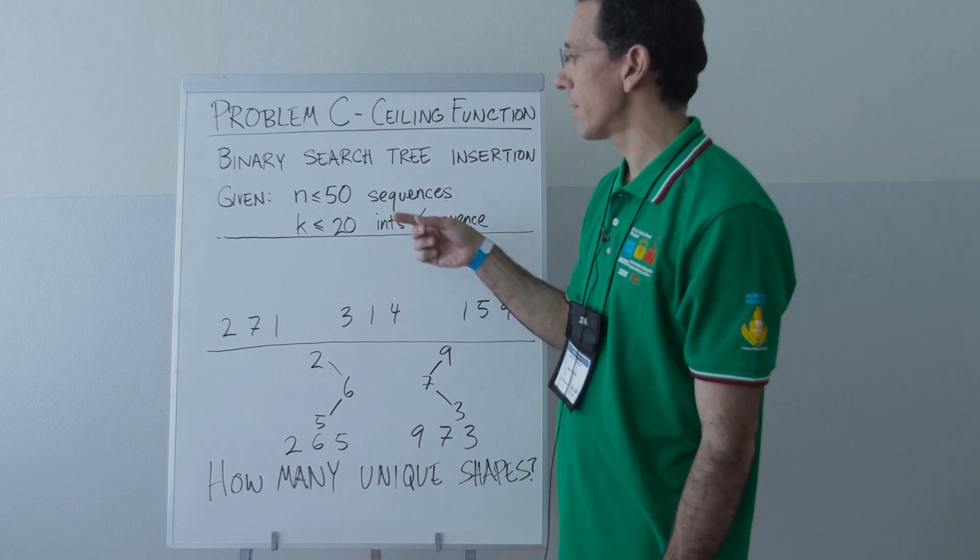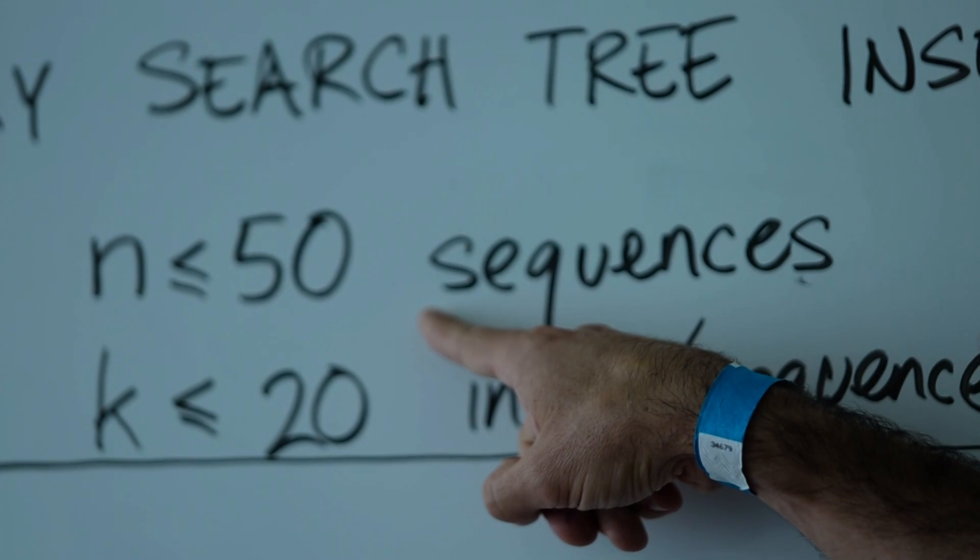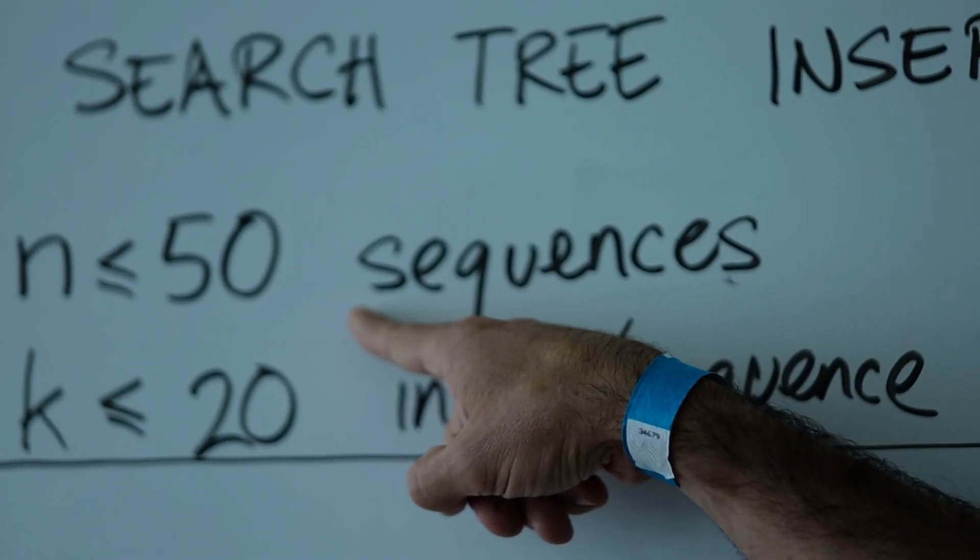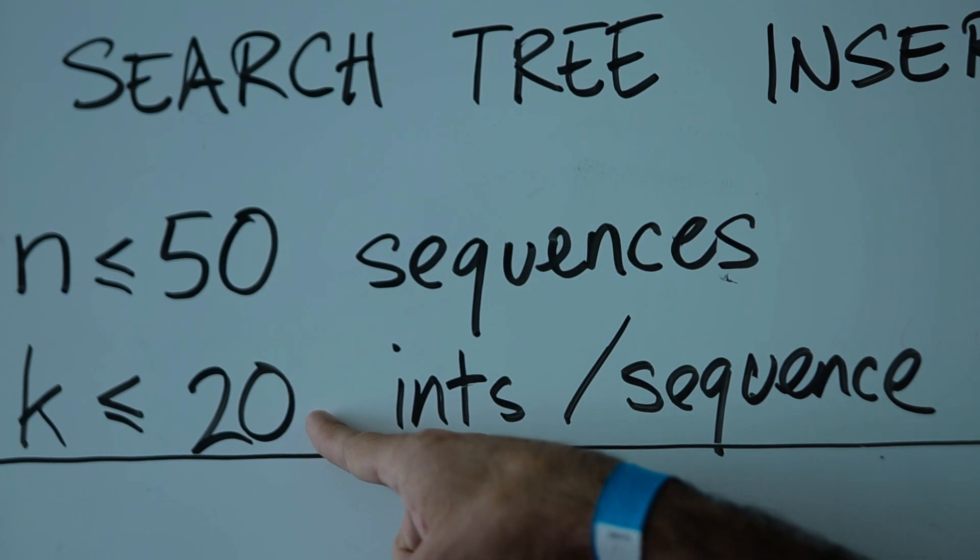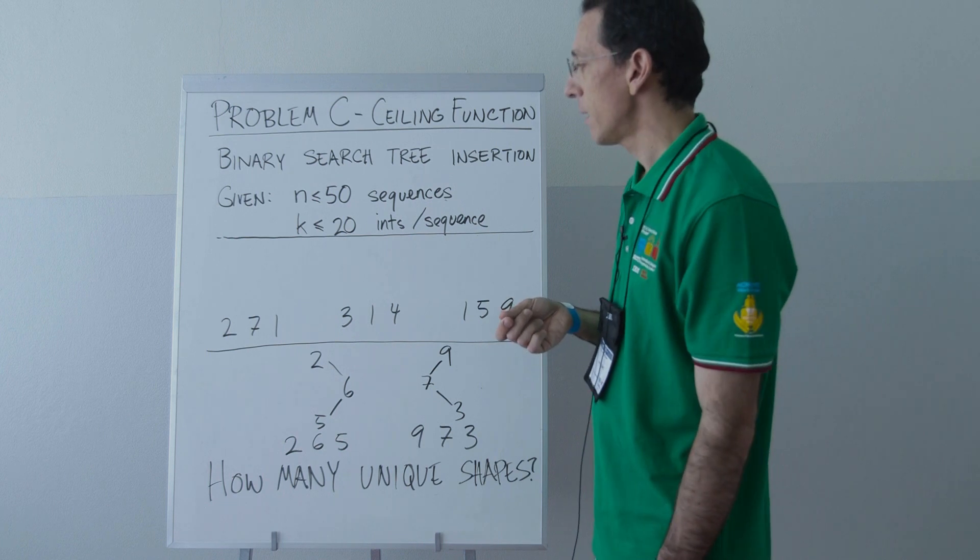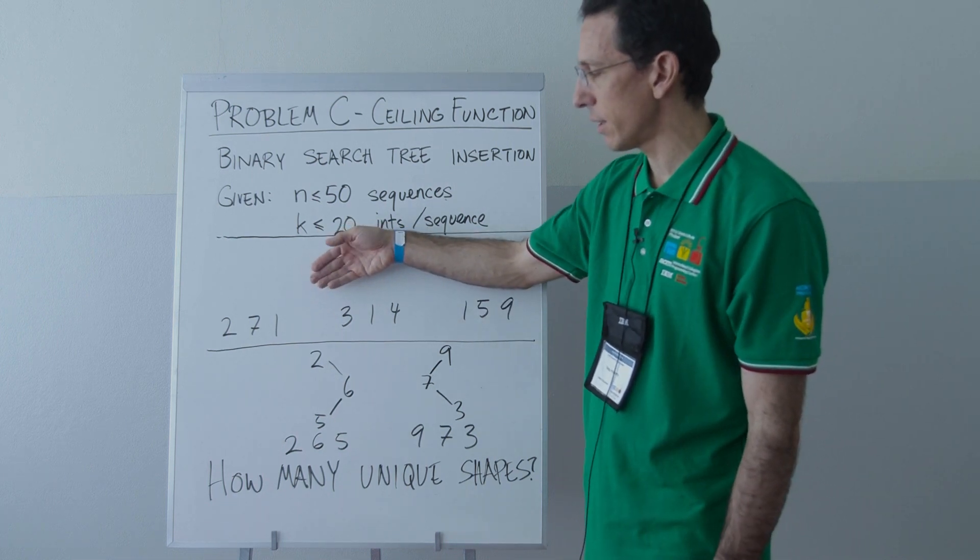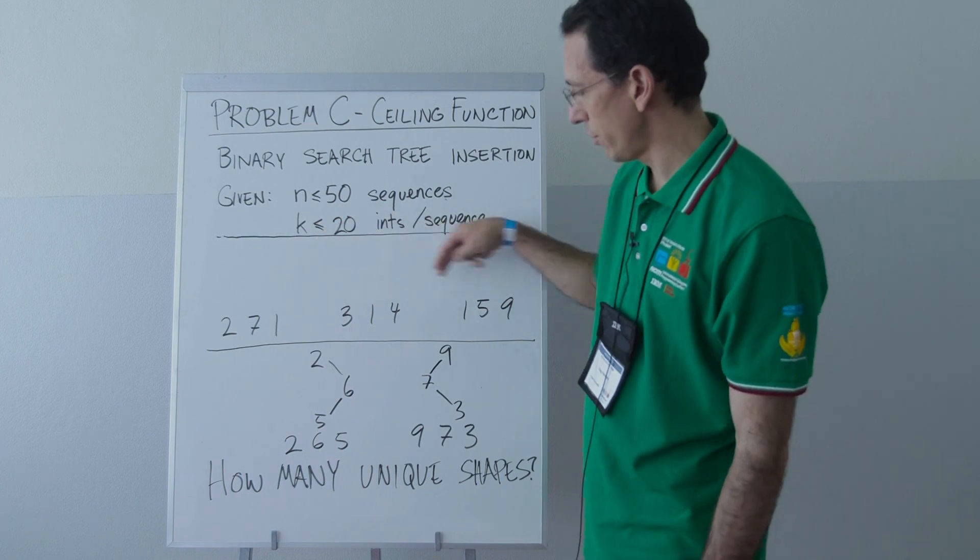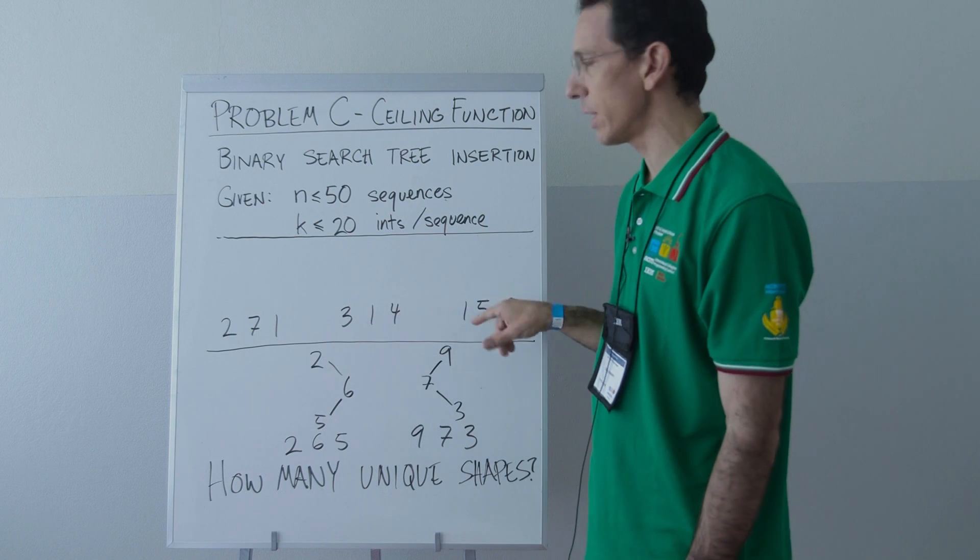The idea here is that as input you're going to be given up to 50 sequences of integers, and each of those sequences is going to have up to 20 integers, and every sequence will have the same number of integers. So you might get, in this case I've shown you the first sample data, 5 sequences: 1, 2, 3, 4, 5, of 3 integers each. 1, 2, 3; 1, 2, 3; and so on.